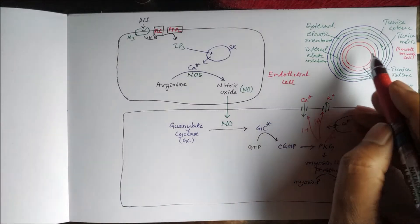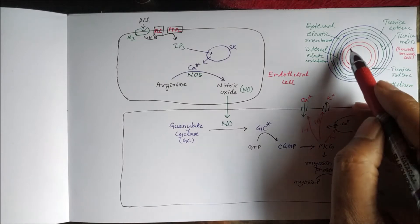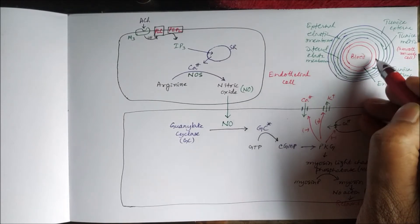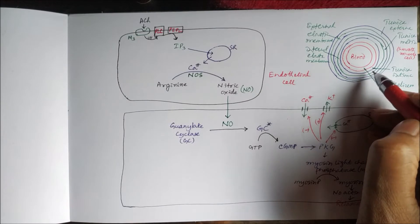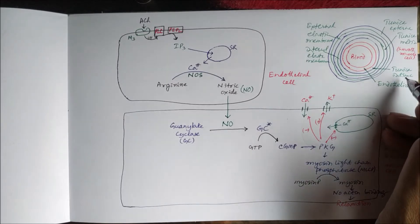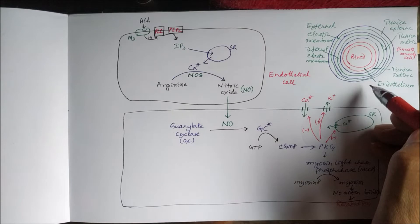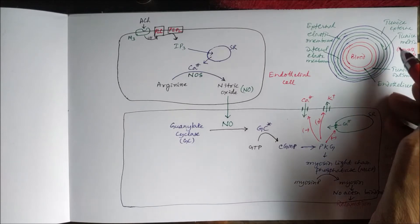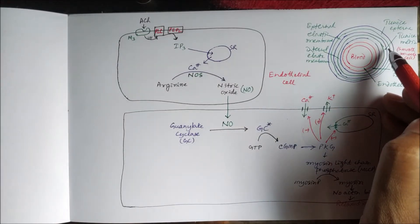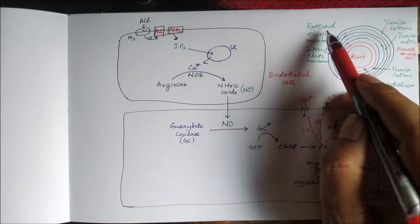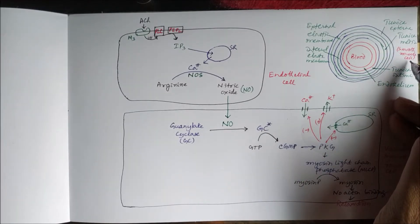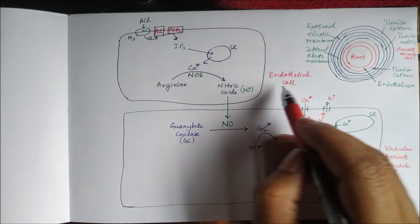If we see the blood vessel, the inner wall of the blood vessel is called the endothelium. The endothelium is surrounded by three layers: tunica intima, tunica media, and tunica externa. Between the tunica intima and tunica media we have the internal elastic membrane, and between tunica media and tunica externa there is the external elastic membrane. The middle layer, tunica media, contains smooth muscle cells.